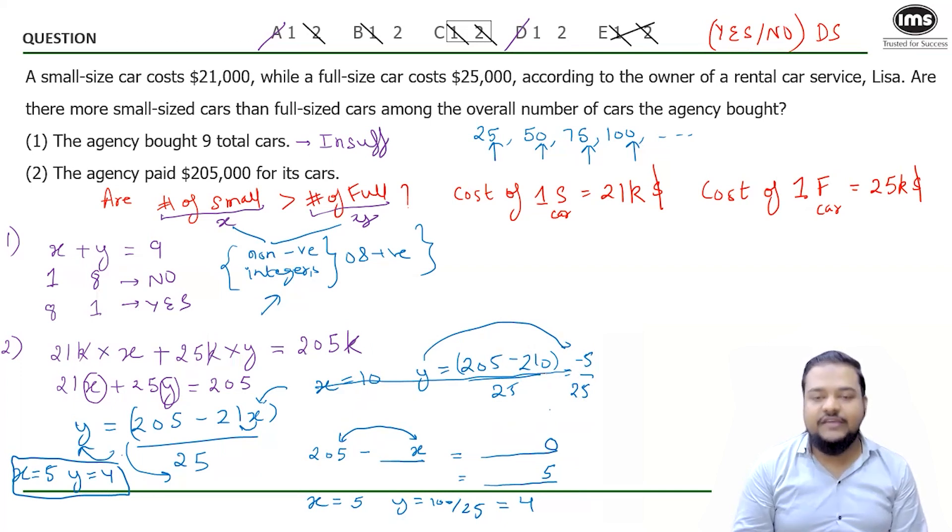Now you can easily observe if you increase the value of X from 10, Y will always be negative, whether fraction or integer, but it will always be negative. Try X equal to 15. 21 into 15 will be very much greater than 205. So Y will always be negative now and even more negative as you increase the value of X. Hence we can conclude that this is the only solution we can get. Only solution.